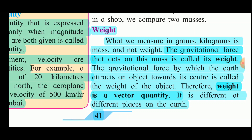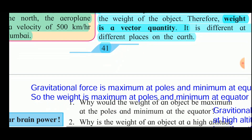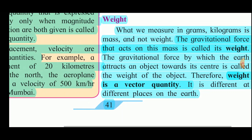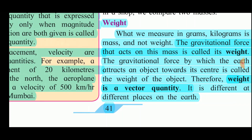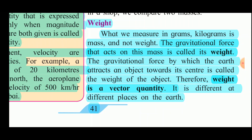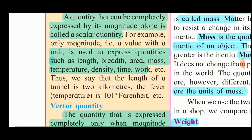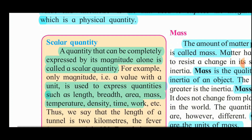At sea level the gravitational force is maximum, so the weight of an object will be maximum there. As we move towards the poles, the gravitational force is different, and so the weight of the object will also change. Thus, weight is a vector quantity and it is different at different places on the earth.